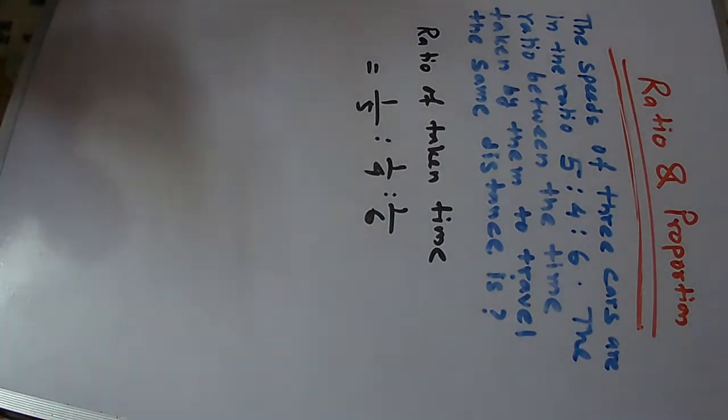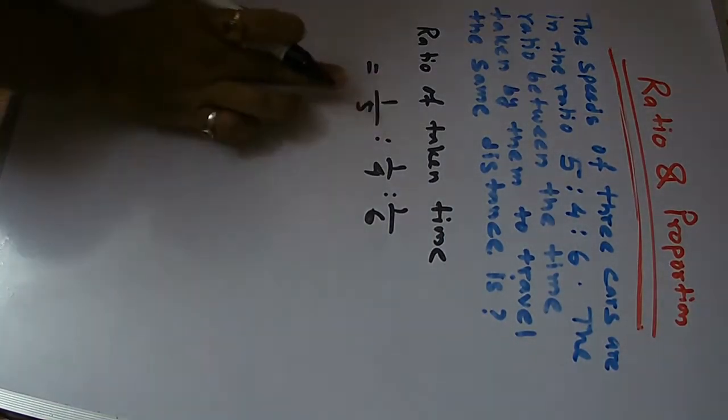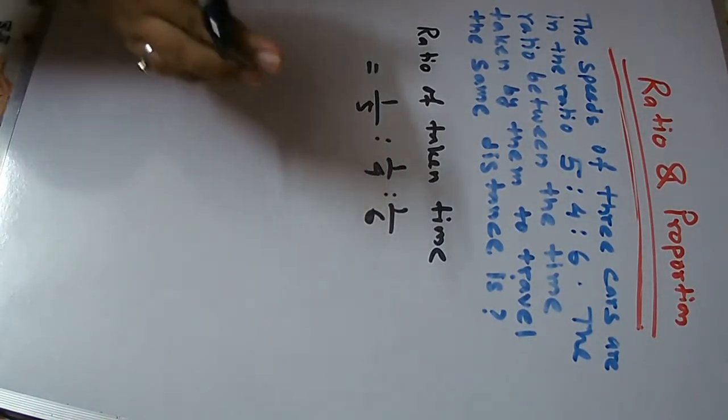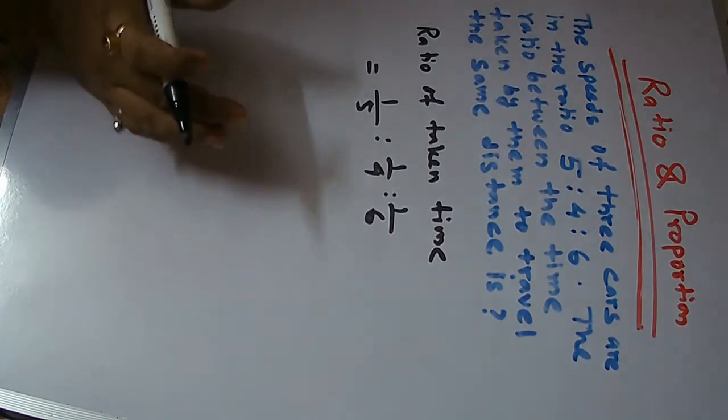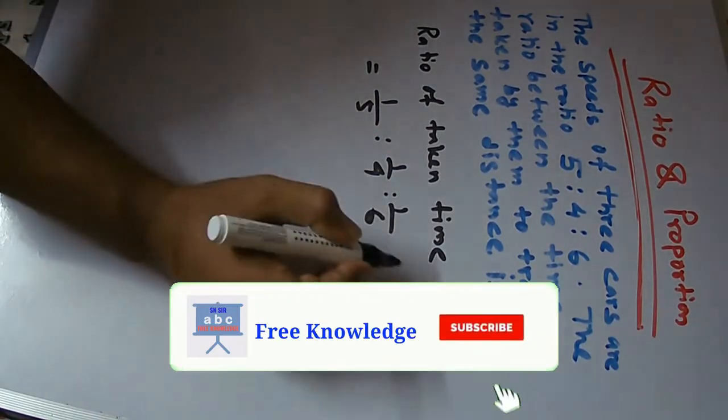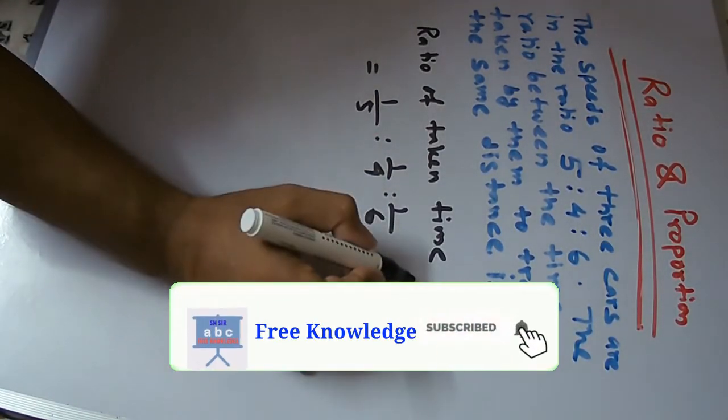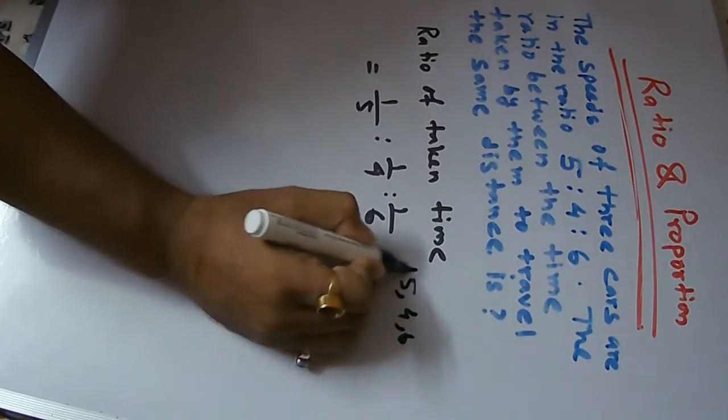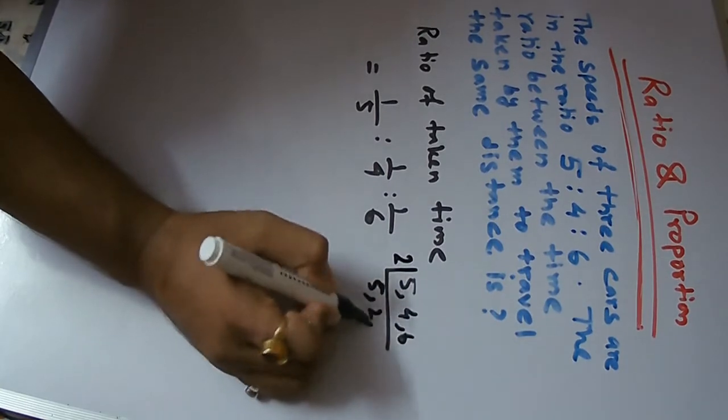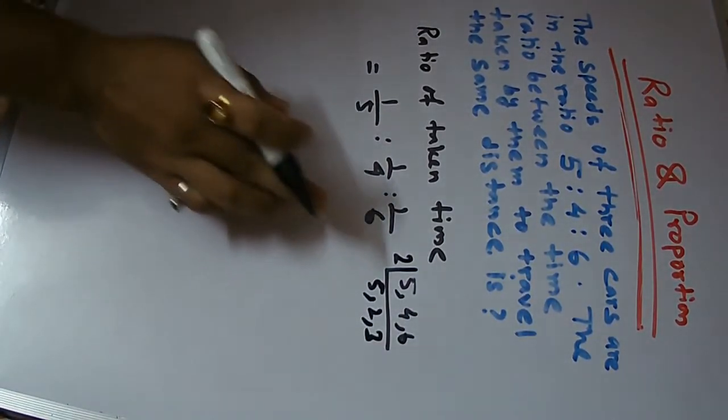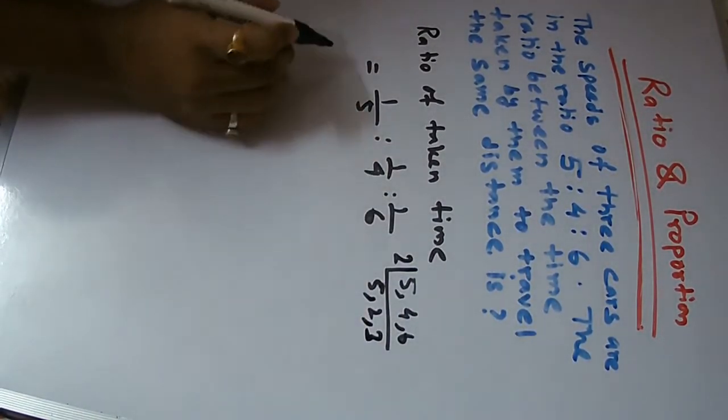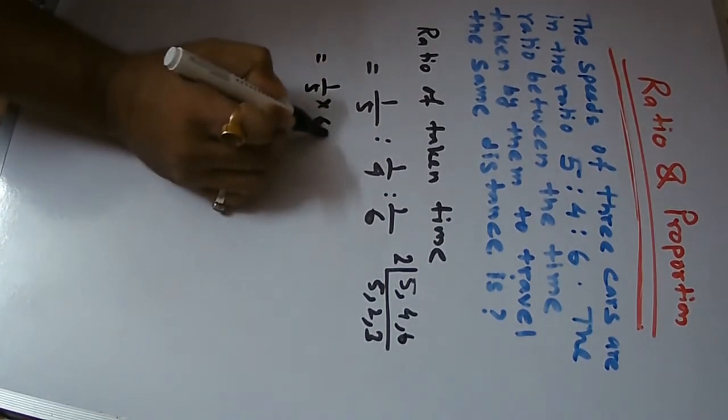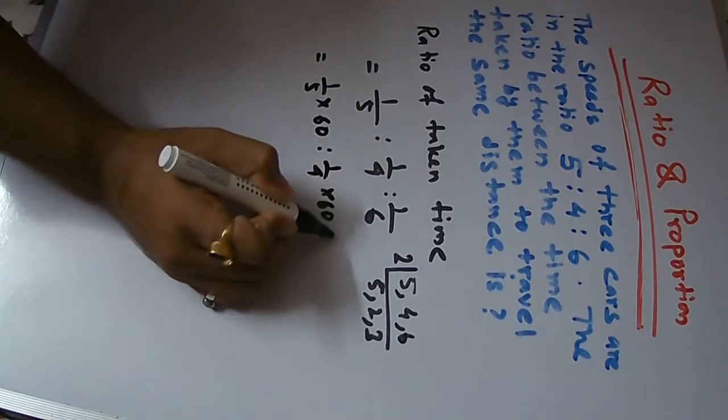This is the time ratio. Now, to simplify 1/5 : 1/4 : 1/6, we need to find the LCM of 5, 4, and 6. The LCM of 5, 4, 6 is 60. Multiply each term by 60 to get the answer.